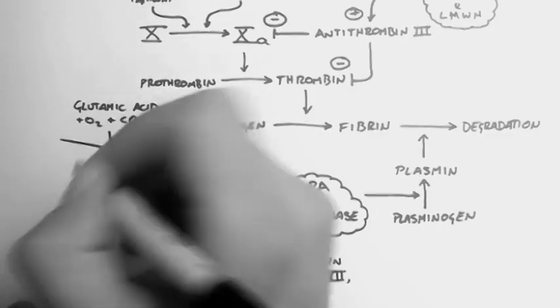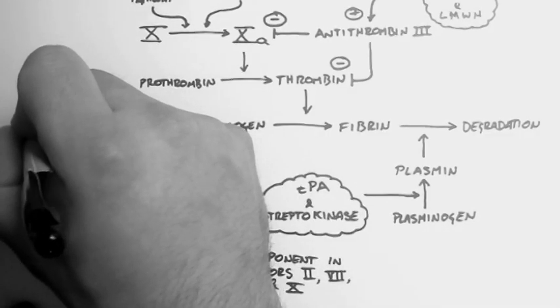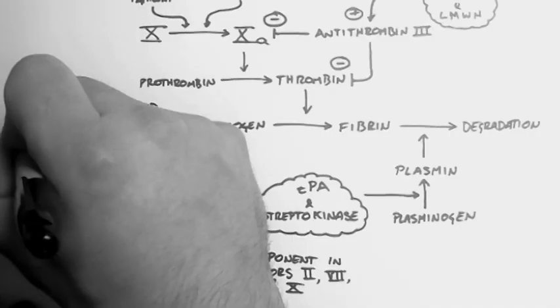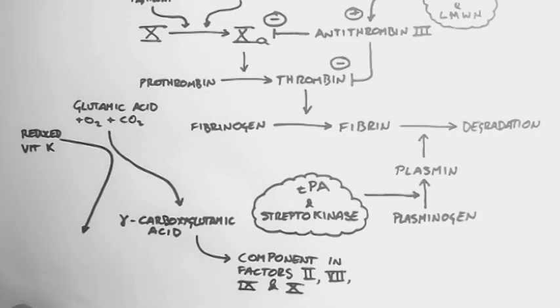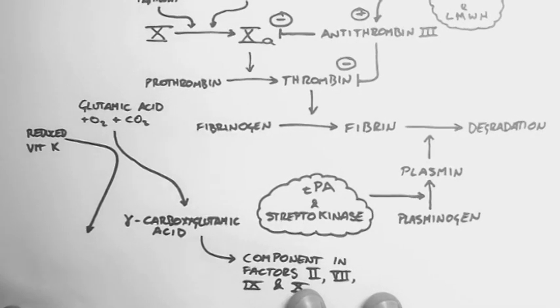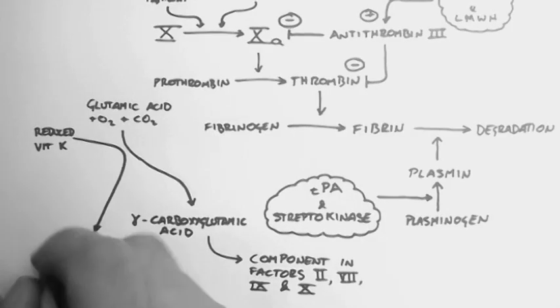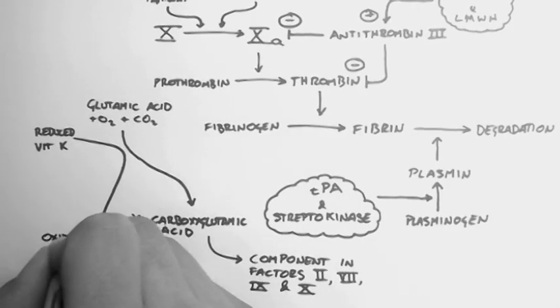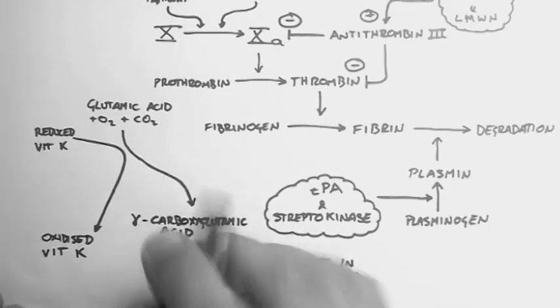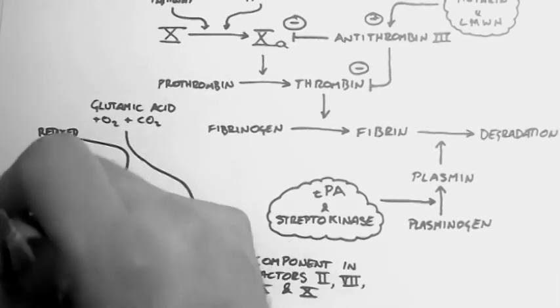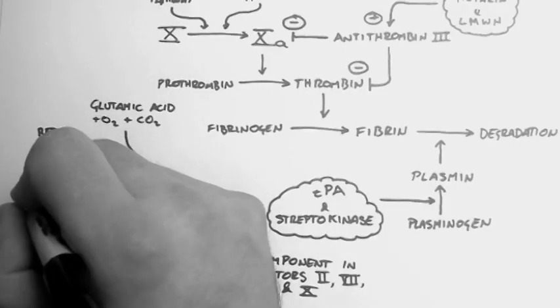Now this conversion process requires reduced vitamin K, which then becomes oxidized vitamin K. So it helps reduce the glutamic acid reaction.